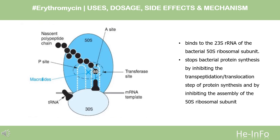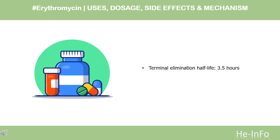The strong affinity of macrolides, including erythromycin, for bacterial ribosomes supports their broad-spectrum antibacterial activities. Half-life: The elimination half-life of oral erythromycin was 3.5 hours according to one study, and ranged between 2.4 to 3.1 hours in another study. Repetitive dosing of erythromycin leads to increased elimination half-life.